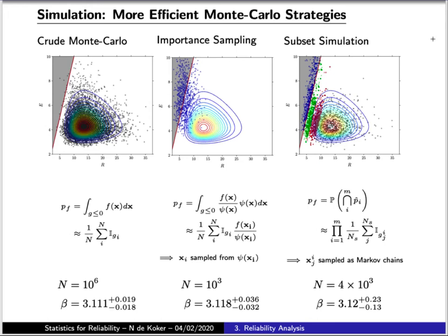With importance sampling, you recognize that you're wasting a lot of effort computing things that are quite far away from your region of failure. So what you do instead is bias your sampling to be centered more around where you expect failure to occur. And then through a mathematical manipulation, you correct for that shift in the distribution to come up with your probability of failure.